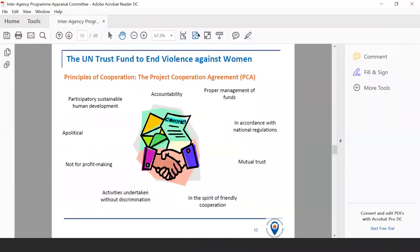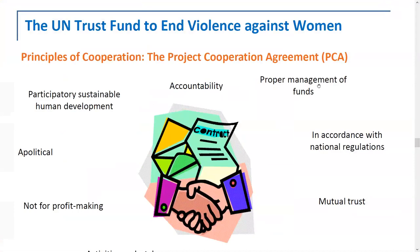Talking about the project cooperation agreement — it is a legally binding document, which might sound a little bit scary, but we don't want it to be. It's obviously a lot of UN speak, a technical document, and you may not understand all the terminology, which is why we're doing this session. It's signed between you on behalf of your organization and UN Women on behalf of the trust fund. Importantly, the project cooperation agreement is accompanied by your project document — the project proposal — including your results framework and any annual work plans.